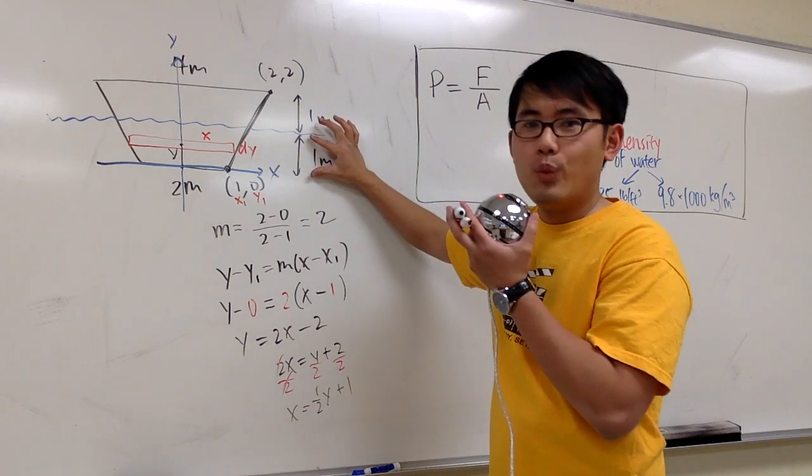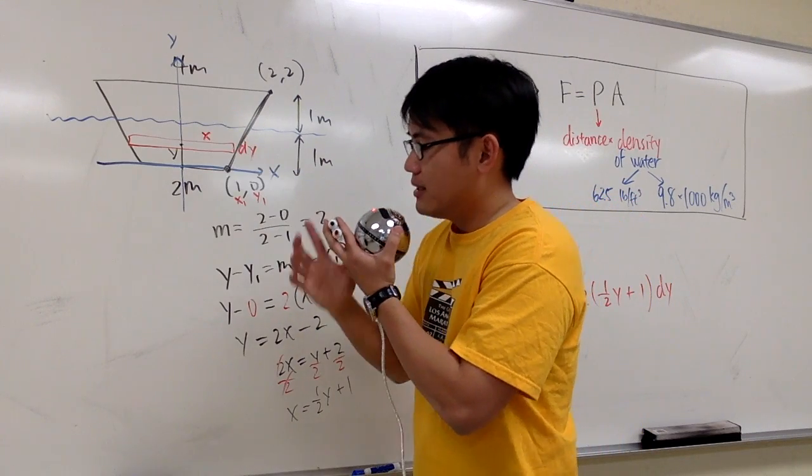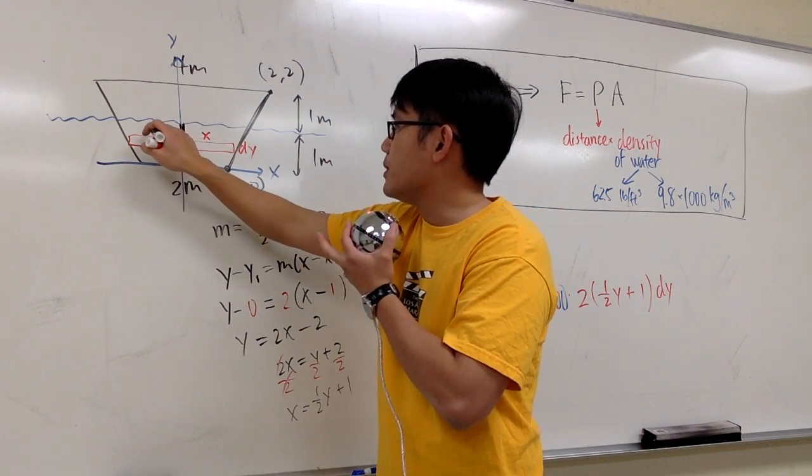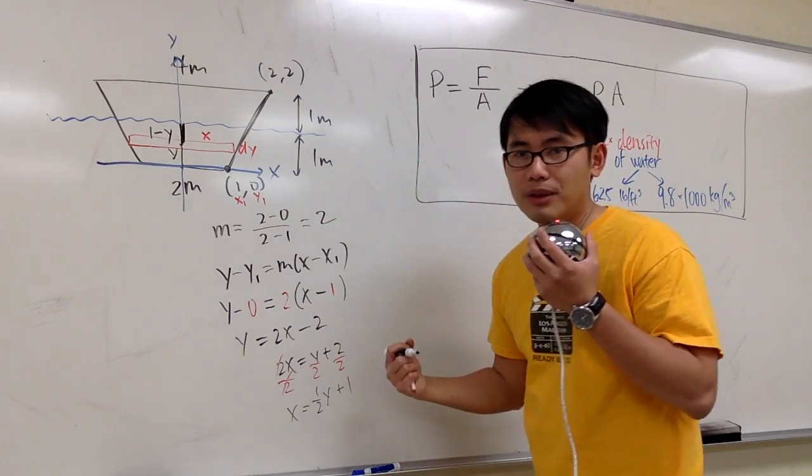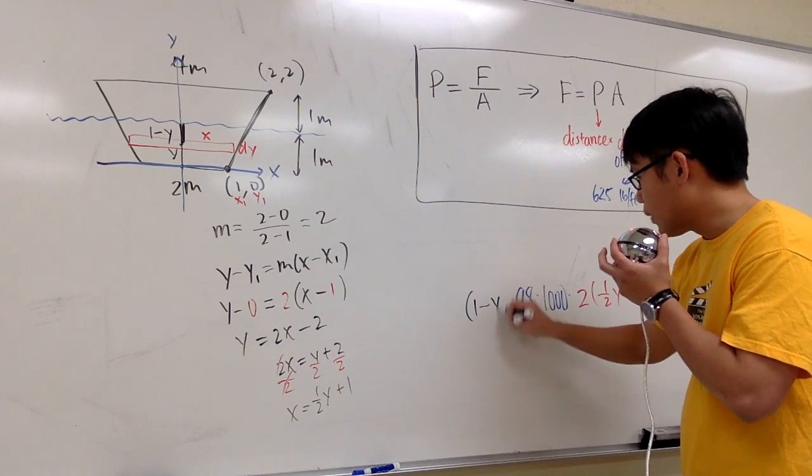The whole thing is 1. This much right here is 1. So that means this distance here, from here to here, it has to be 1 minus y. And that's the distance we have to multiply. So I put this down right here, 1 minus y.